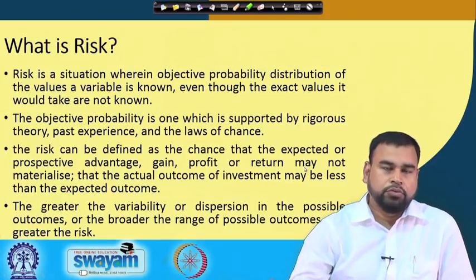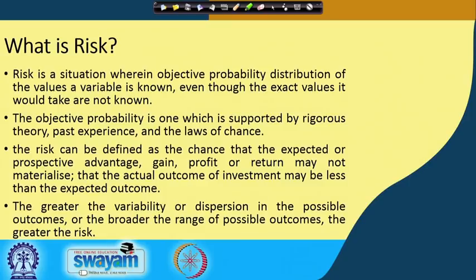Let us first see what do we mean by risk and how risk is defined. You might have known that risk and uncertainty are two words popularly used in financial literature, and there are some theoretical differences between them. Risk is basically a situation where the objective probability distribution of the values a variable can take is known, even though the exact values it would take are not known.